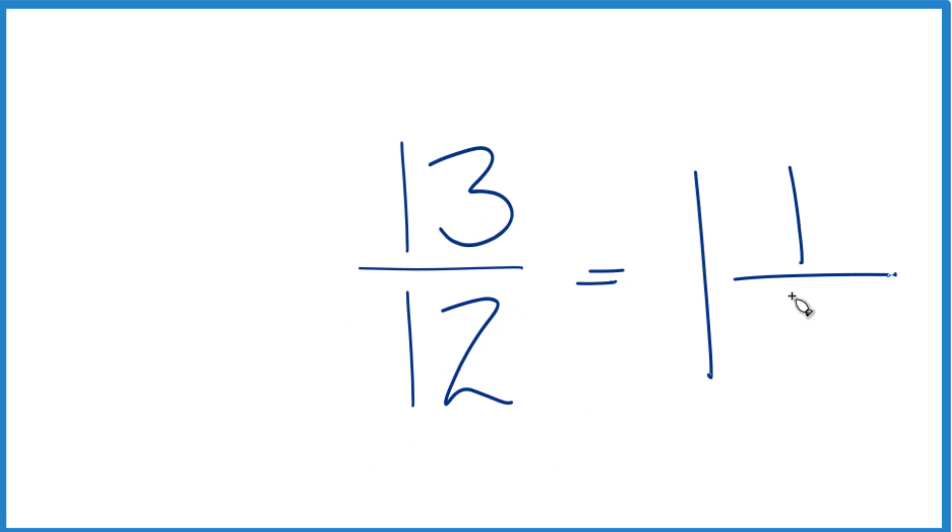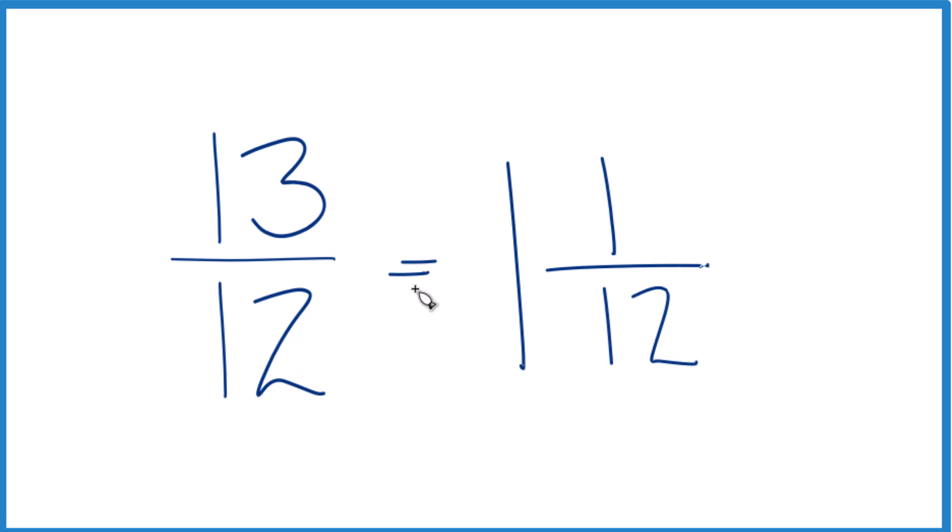We just bring the denominator here across, and 13 twelfths, the improper fraction, equals the mixed number 1 and 1 twelfth.